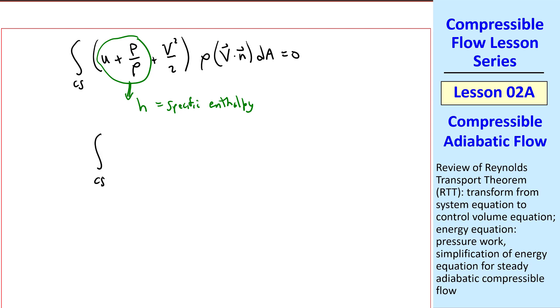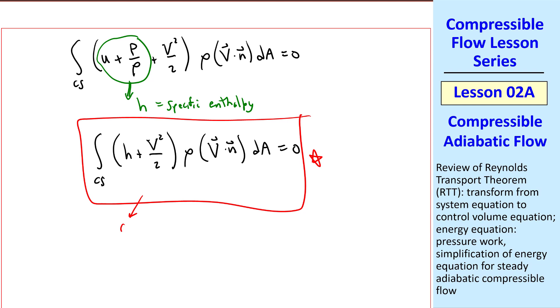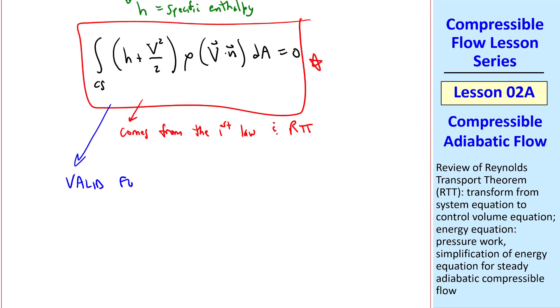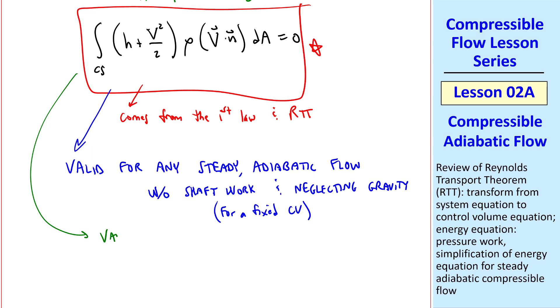So finally, our energy equation becomes control surface integral of H plus V squared over 2, rho, V dot N, dA, equals zero. Keep in mind that this comes from the first law of thermodynamics, and we've used the Reynolds transport theorem. This equation is valid for any steady adiabatic flow without shaft work and neglecting gravity, and it applies to a fixed control volume. Finally, I'll state that this is valid for any fluid, even non-ideal gases and liquids. In this course, of course, we'll deal with ideal gases, and simplify this equation further, in upcoming lessons.